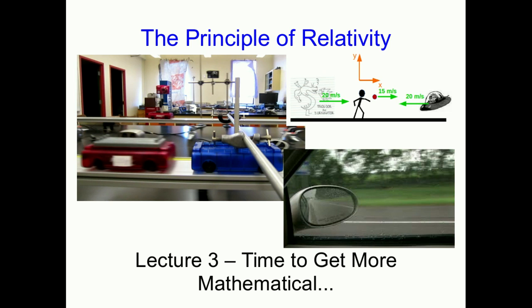Hello and welcome to lecture 3 of the Principle of Relativity in Physics 1104, and it's time to get a little more mathematical. What we're going to do in this lecture is take a bunch of the ideas we've seen in the previous two lectures and derive them with a little more mathematical rigor, and in the process we're going to get a whole bunch of other equations that we're going to find useful in problem solving.